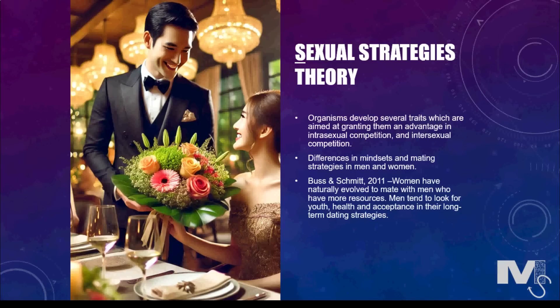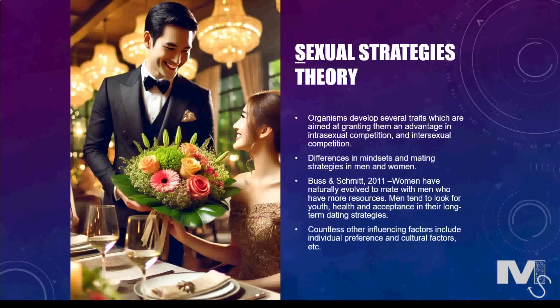What men and women have in common in long-term dating is that both want mates who are intelligent, kind, understanding, healthy, dependable, honest, loyal, loving, and adaptable. The theory also states that there are countless other factors — including individual preferences and cultural factors — always in play, and not everyone gets the partner they desire because of all these factors combined. For example, many cultures employ arranged marriages, which inhibit individual freedom to act on preferred mating strategies.